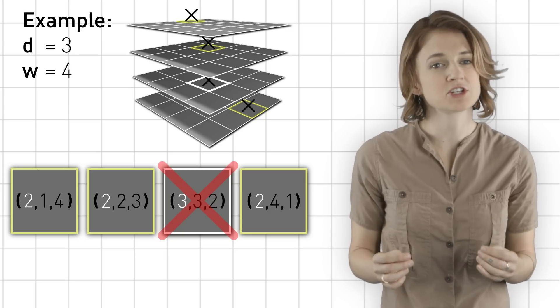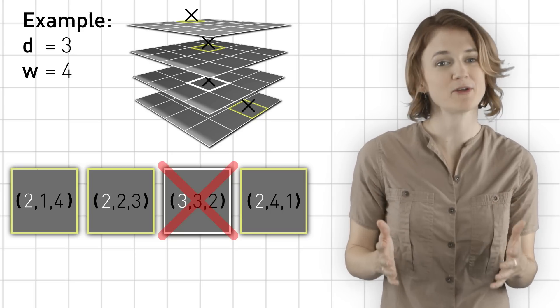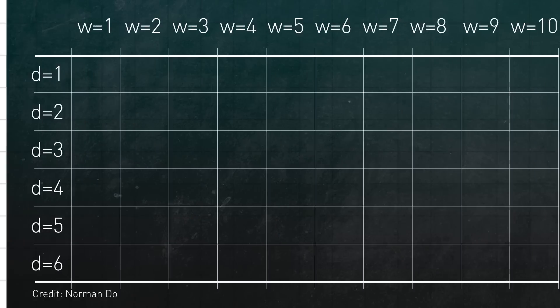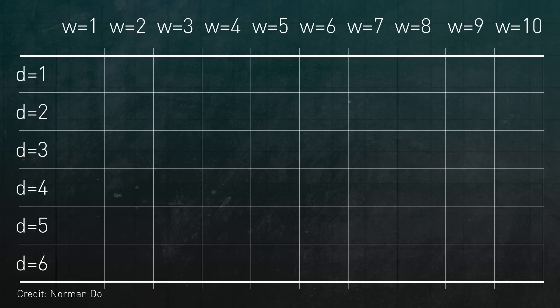You should check that this definition aligns with your intuition about the three-dimensional board. Let's review what we know using this handy chart. The horizontal axis is the width of the tic-tac-toe board, and the vertical axis is the dimension. So, for example, this square corresponds to the standard width three dimension two board. Within each square, we'll note whether X wins or the game is a draw, under optimal play.